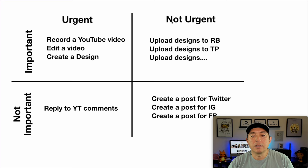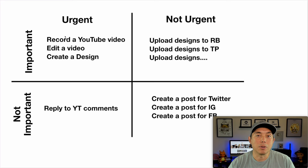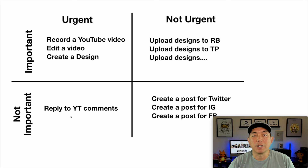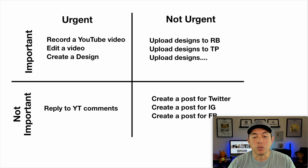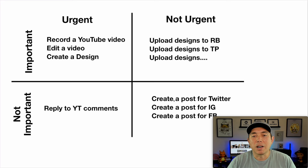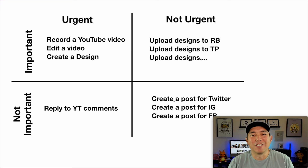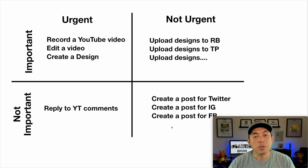Think of it this way: the urgent and important quadrant is your 'do' list, the important but not urgent quadrant is your 'plan' list — schedule those so they don't become urgent. The not important but urgent quadrant is your 'delegate' list if you have someone to help. And the not important and not urgent quadrant? Probably delete those altogether. Ask yourself: why is it on the list? If something isn't important or urgent, consider moving it up in priority or removing it.